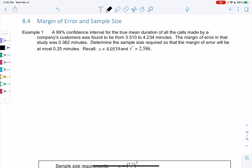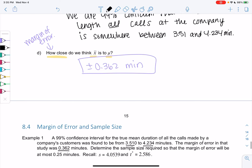Last section, we found a 99% confidence interval for the true mean duration of all calls made by some company was found to be between 3.510 and 4.234. The margin of error was 0.362, right? You might remember doing that.